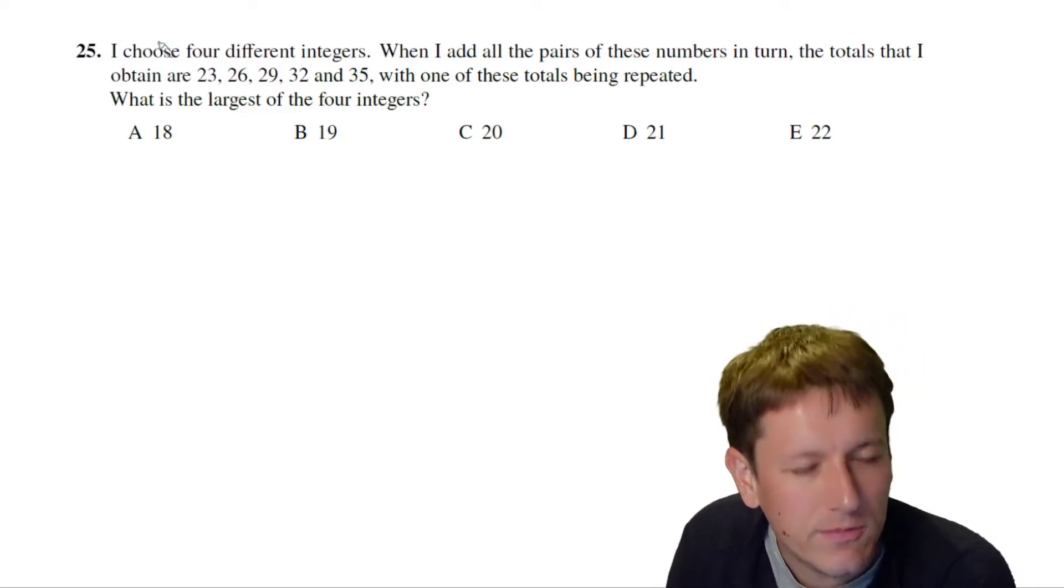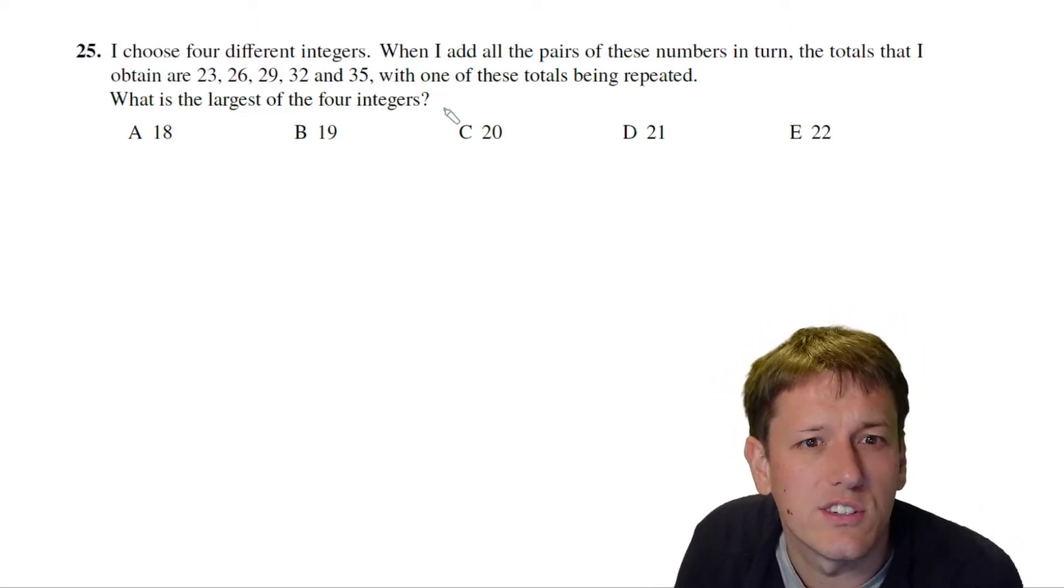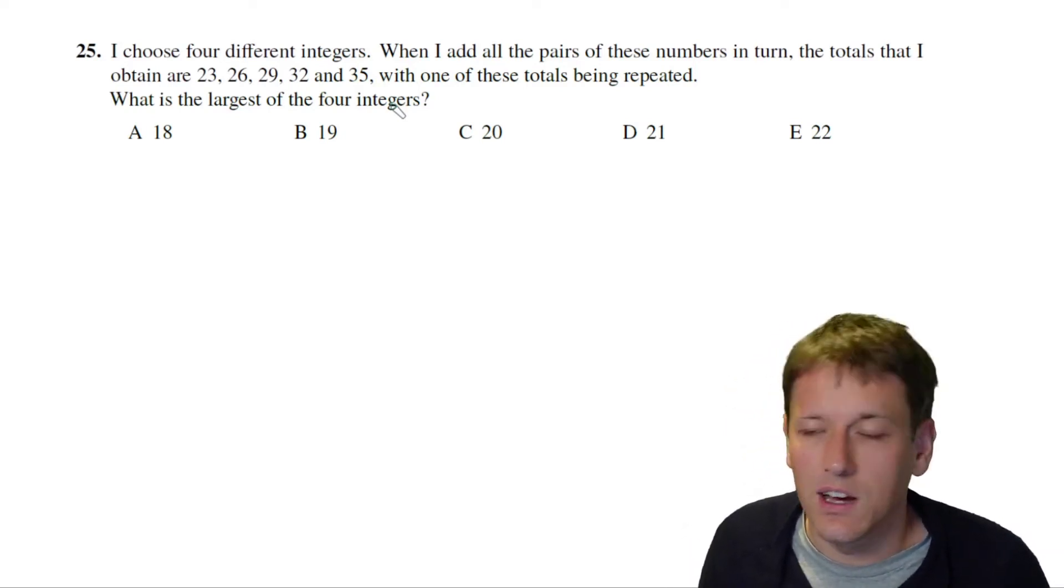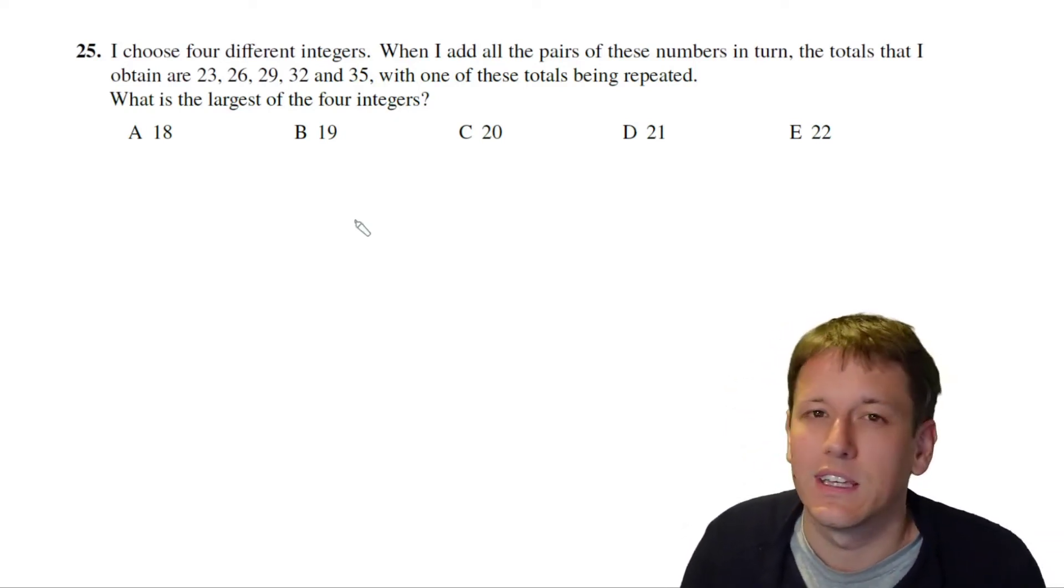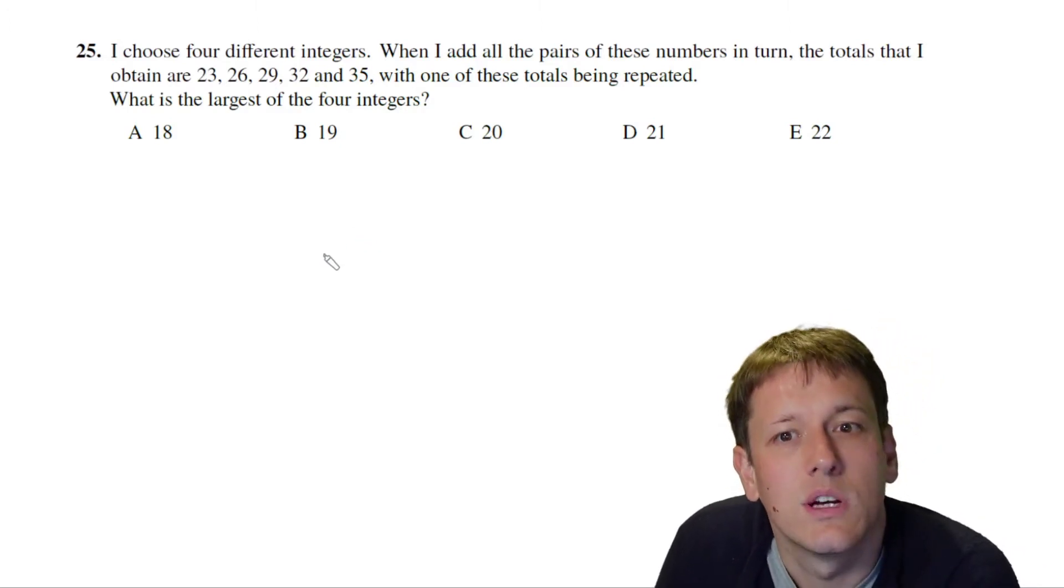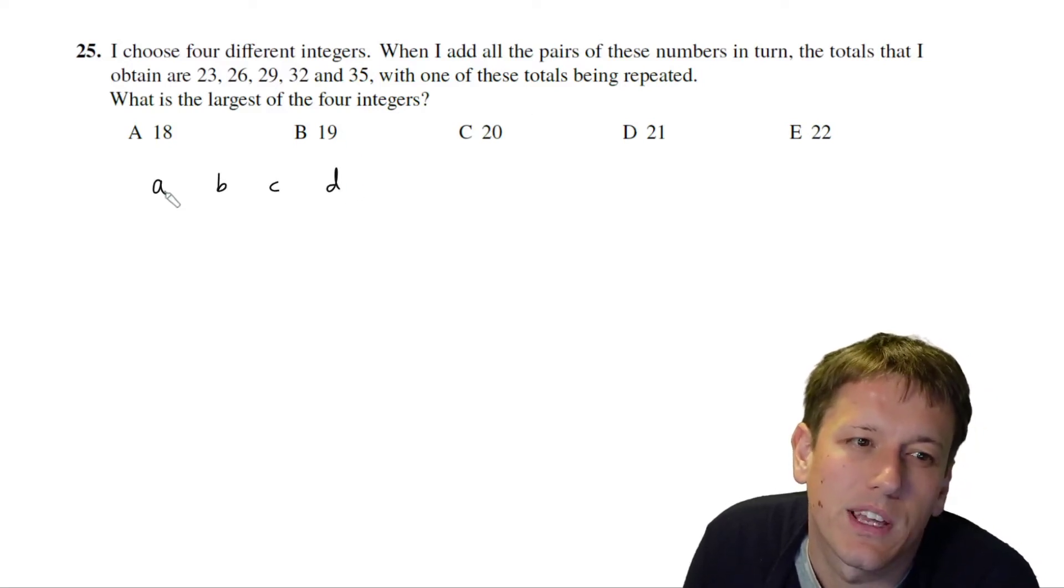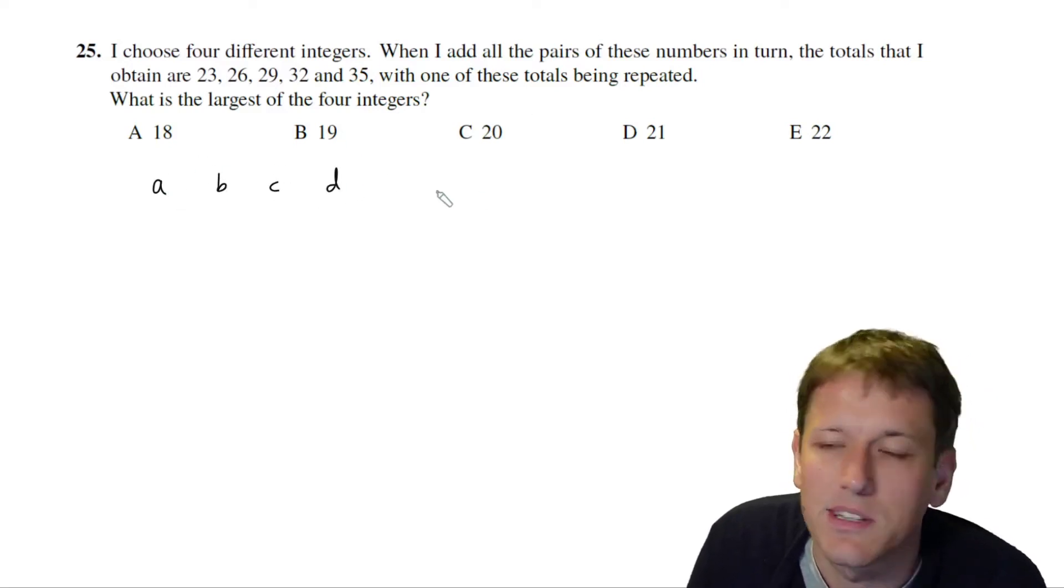So let's just remember this question. It says I choose four different integers. When I add all the pairs of these numbers in turn, the totals that I obtain are 23, 26, 29, 32, and 35. One of those totals is repeated, and what's the largest of the four integers? So the four numbers are A, B, C, and D, and the totals that we're looking at are like A plus B, A plus C, A plus D, etc.